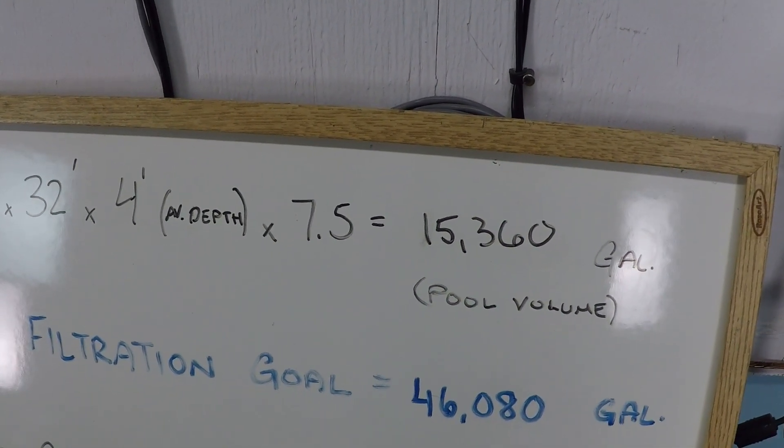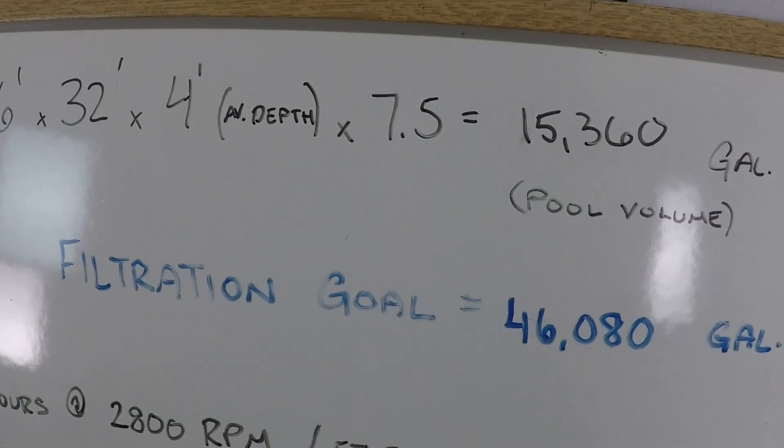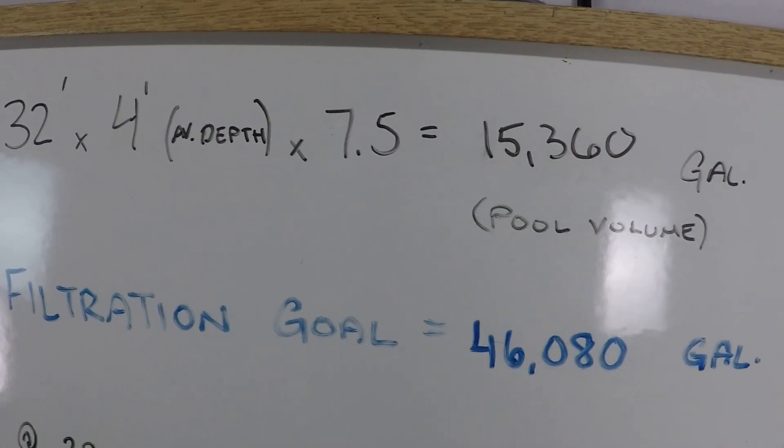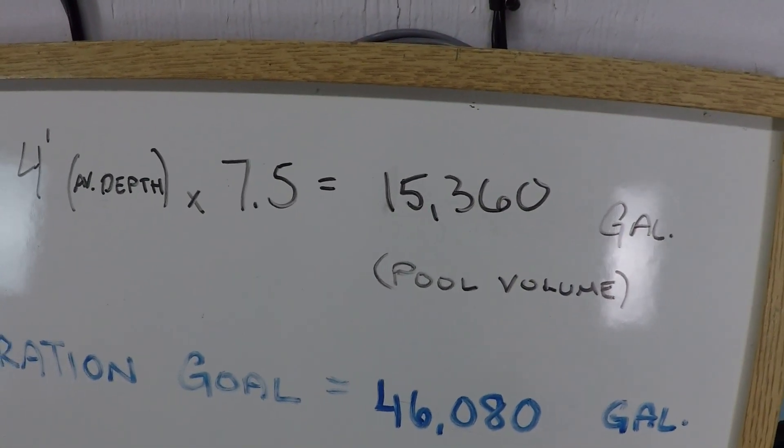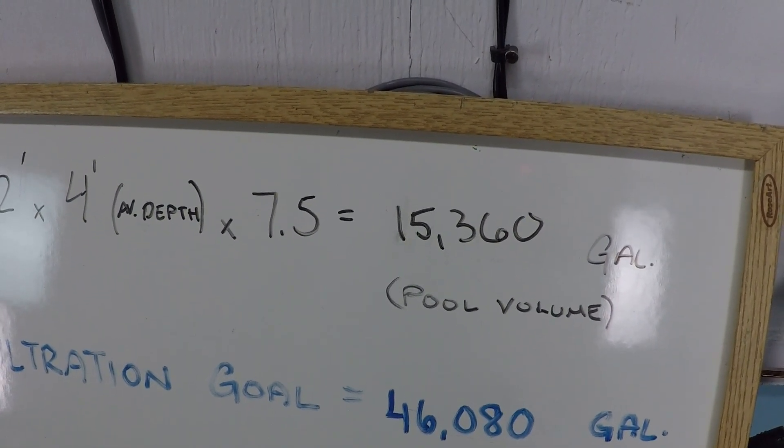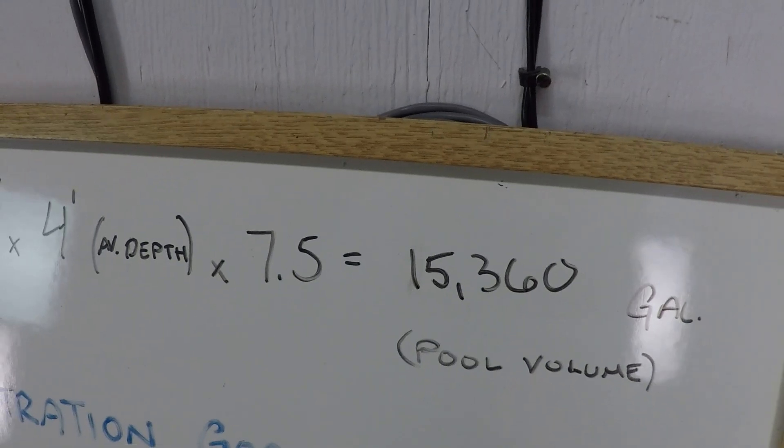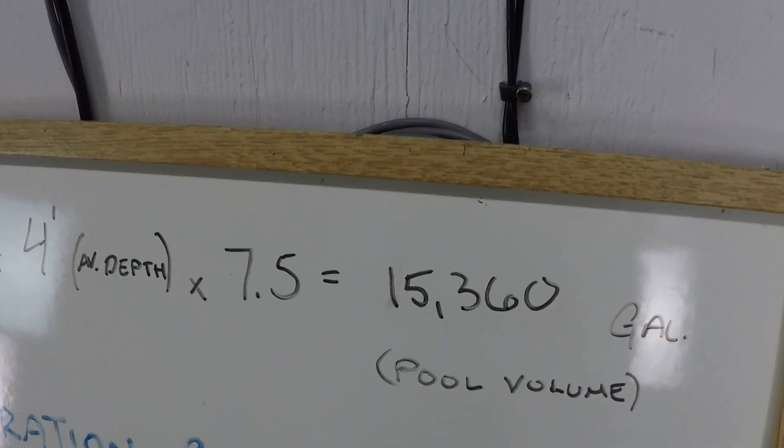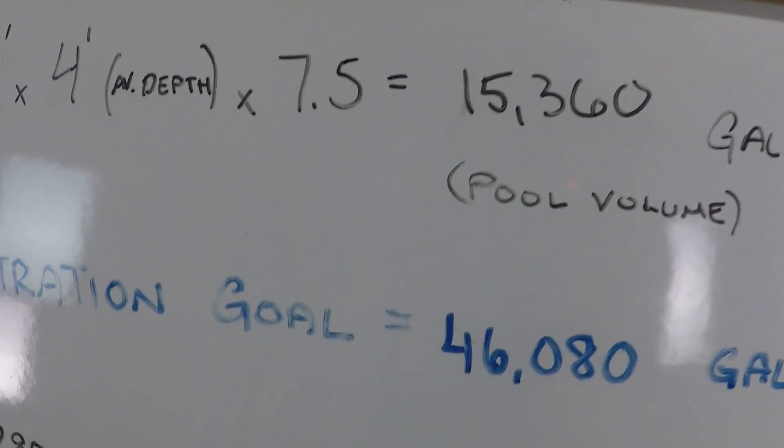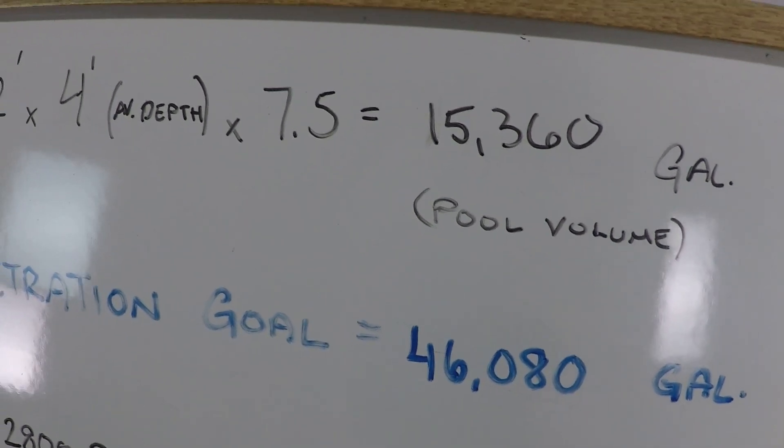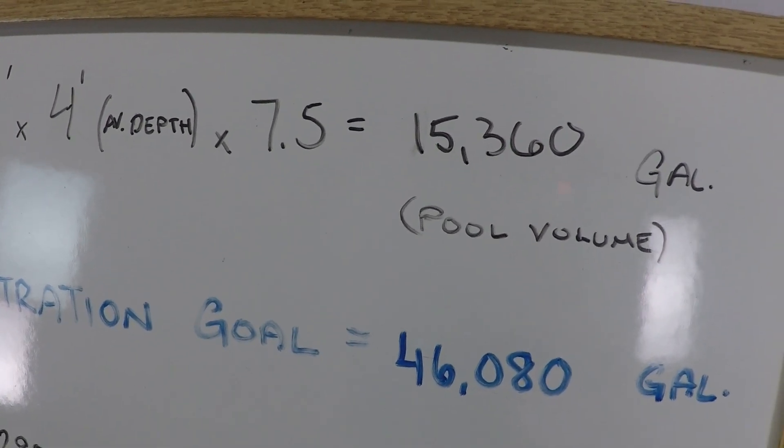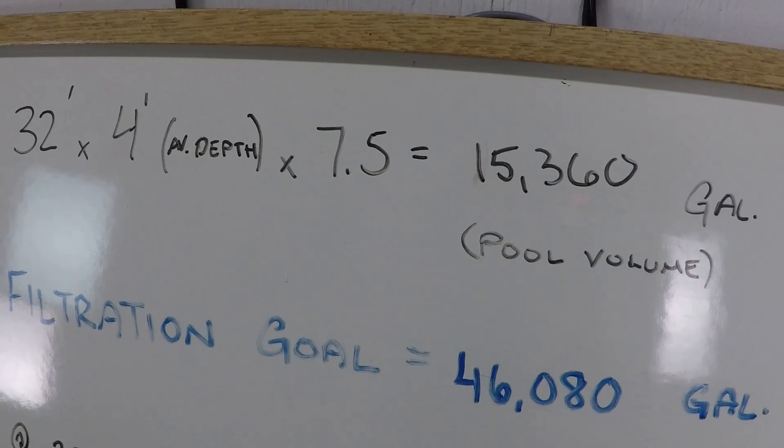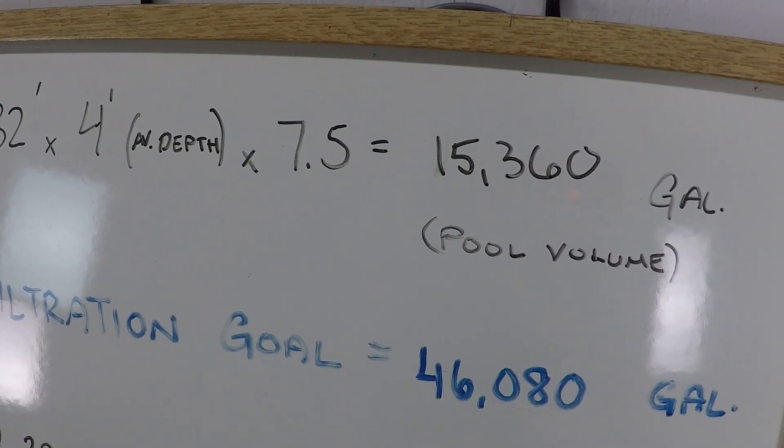15,360 gallons. And the first thing that we need to talk about is the filtration goal of 46,080 gallons. And why 46,000? Why not just 15,000? Well, the goal is you want to filter all of your water every day. But if you only filtered 15,000 gallons, you didn't get all of the water. You only got about 63% of the water. On the second pass, you'd get about 86%. And on the third pass, which is 46,080 gallons, you're going to get about 95% of all of the water in your pool filtered at least one time. So for this example, that can be considered the minimum filtration goal that we're going for.